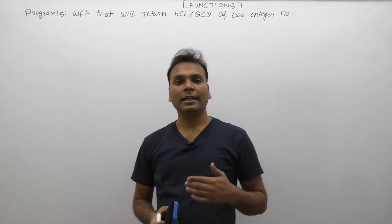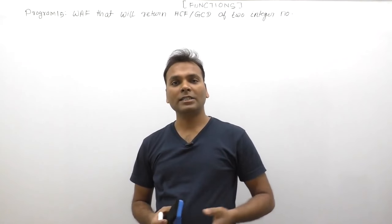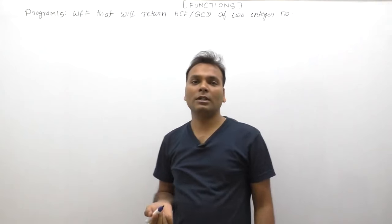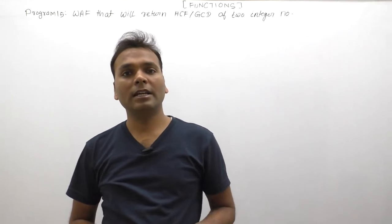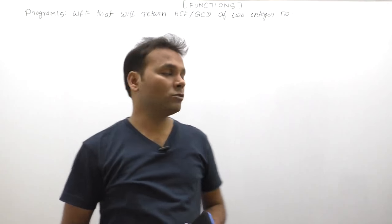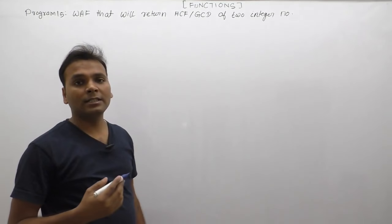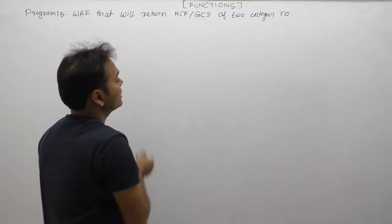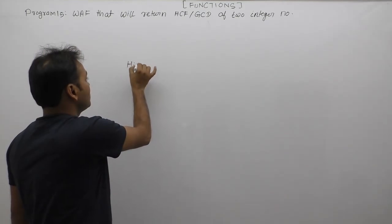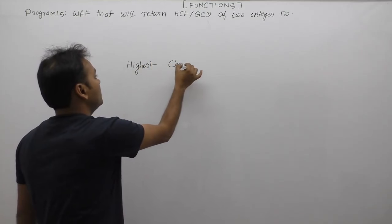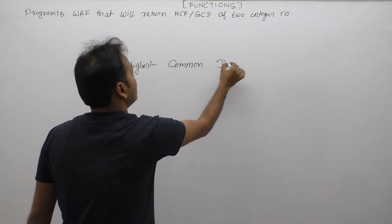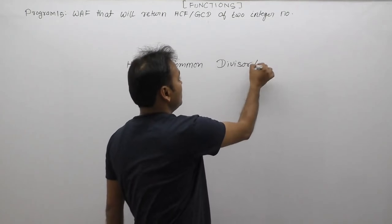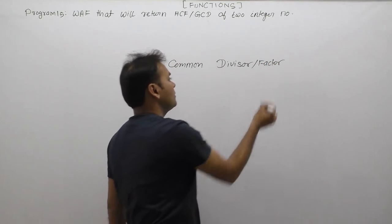Next: C functions for calculating the Greatest Common Divisor (GCD) or Highest Common Factor (HCF). HCF stands for Highest Common Factor and GCD means Greatest Common Divisor. We need to write a C function that will calculate the GCD or HCF of two numbers. Highest Common Divisor means the highest among the common factors of two numbers.